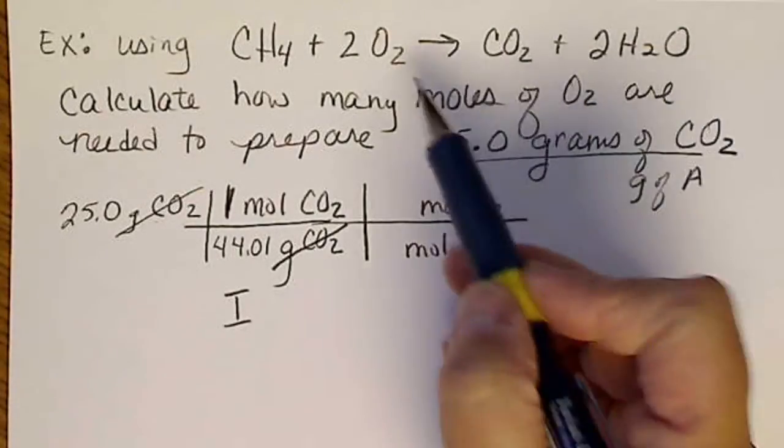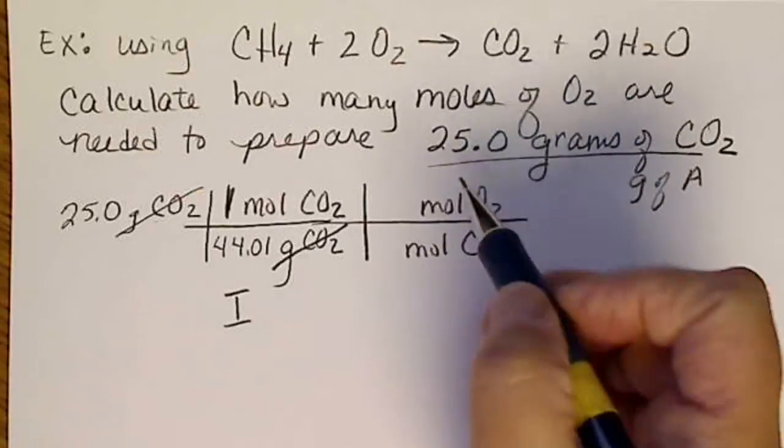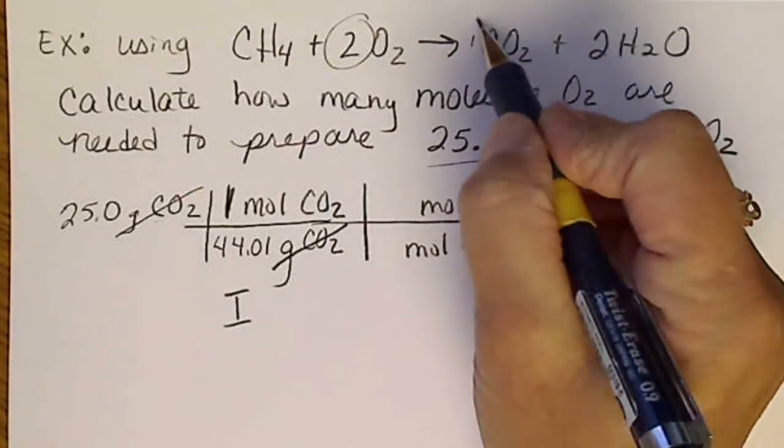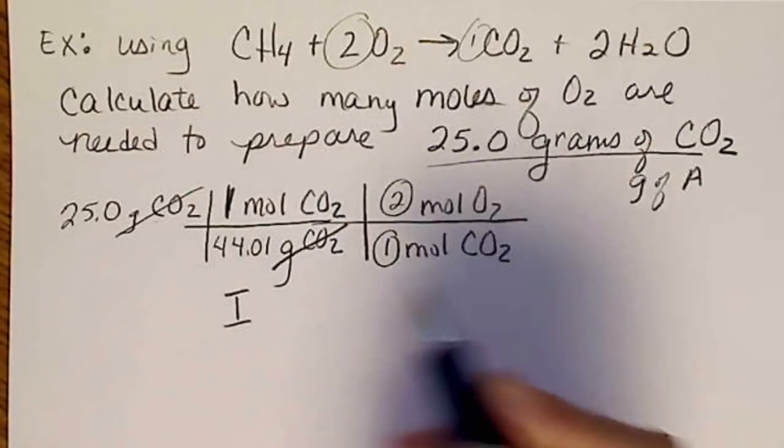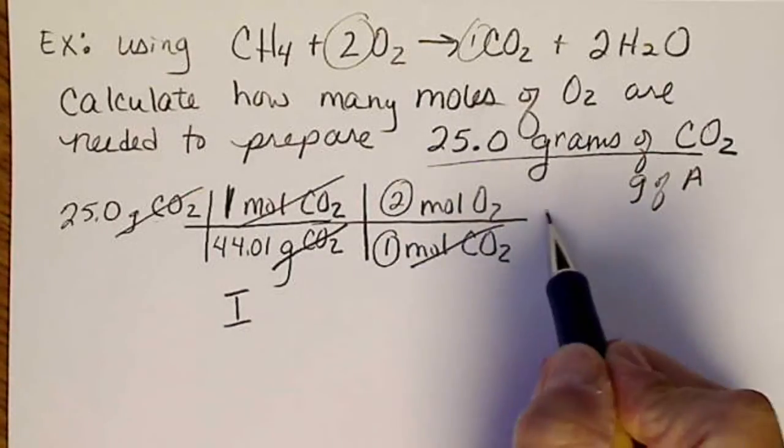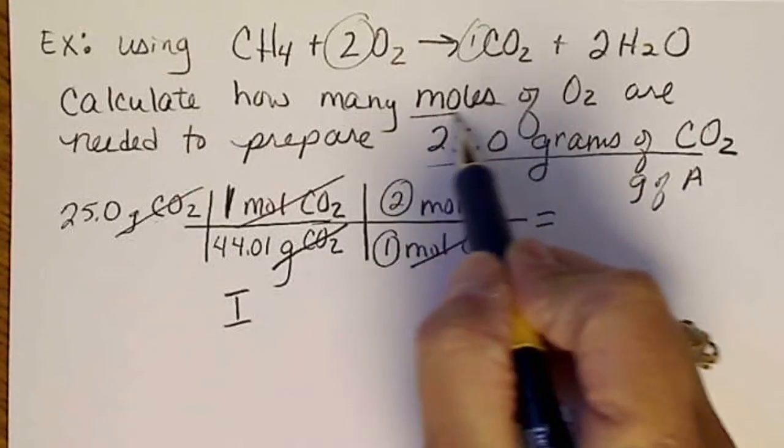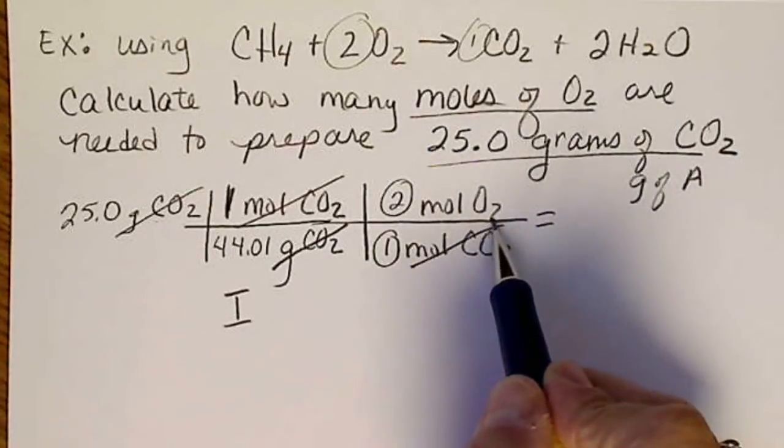And here is where we use the balanced equation numbers. So that two and this invisible one are the two numbers that are going to go here. And moles of CO2 cancels moles of CO2. And we're asked for moles of O2. So we know that we're done.